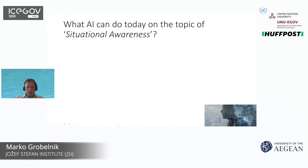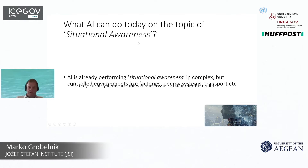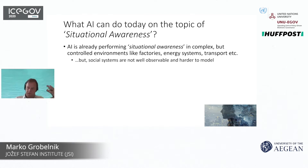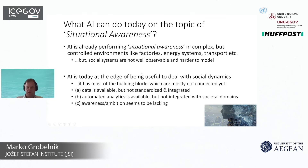What can AI do today on the topic of situational awareness? The technology is available and is used in complex industrial systems — factories, manufacturing, energy, transport. But social systems like governments and other subsystems of a country are way more complex, because data is less structured, there are so many soft issues, and this is much harder to model. That's why these technologies are not used for situational awareness in such systems.